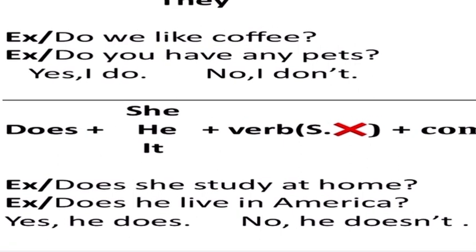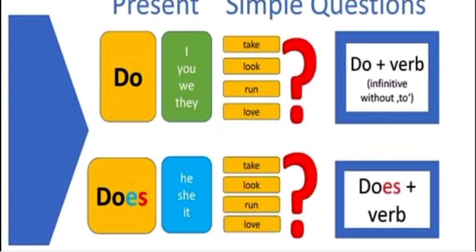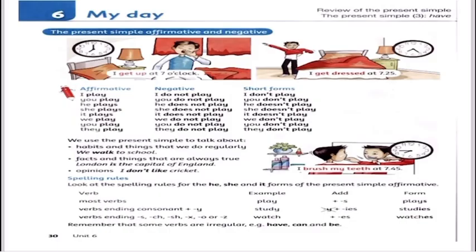'Does he live in America?' — yes, he does / no, he doesn't. When we say 'she studies at home' as a normal sentence, to make it a question we add 'does'. When we add 'do' or 'does', the 's' on the verb is removed — so 'studies' changes to 'study': 'does she study at home?' 'Do' is used with I/we/you/they, and 'does' is used with he/she/it.